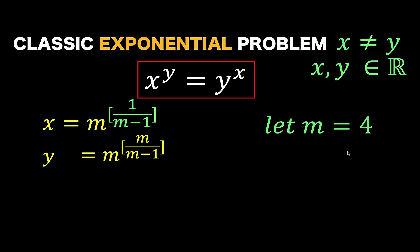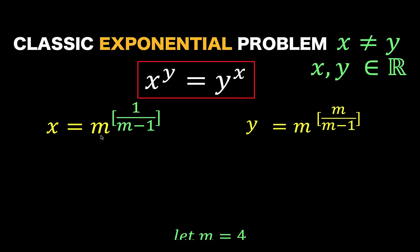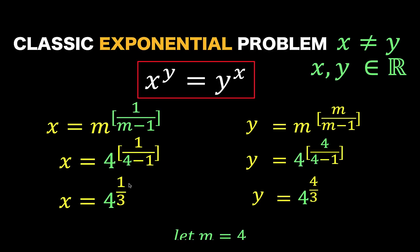So, let's assign first a value for m. Let's say m is equal to 4. If m equals 4, then we can replace all the m's by 4. And we now arrive at this result. x is equal to 4 raised to 1 third, and y equals 4 raised to 4 thirds.